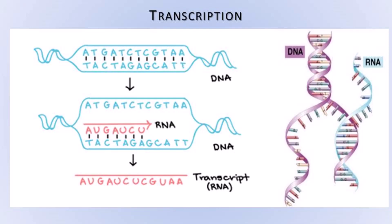Transcription: mRNA is produced as per the sequence of nucleotides on DNA. Only one of the two strands of DNA is used in this process. The sequence of nucleotides in the mRNA being produced is always complementary to the DNA strand used for this synthesis. In RNA there will be uracil instead of thymine from DNA. This process of RNA synthesis is called transcription.